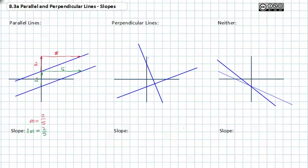If I look at the perpendicular lines, it tells me that it's perpendicular, but I can always check. If I have a rise of one, two, three, four, five — that's my rise — and a run of negative two, my first slope is going to be five over negative two, or negative five-halves.